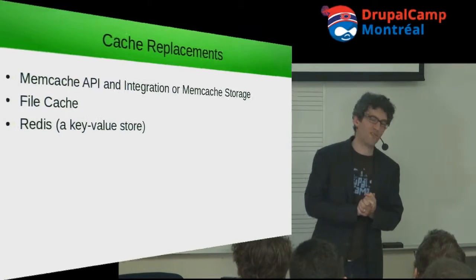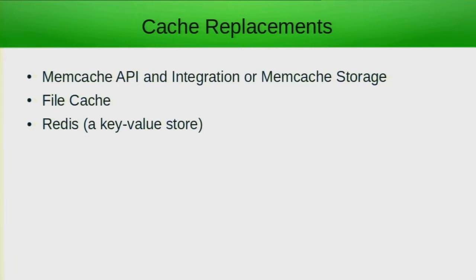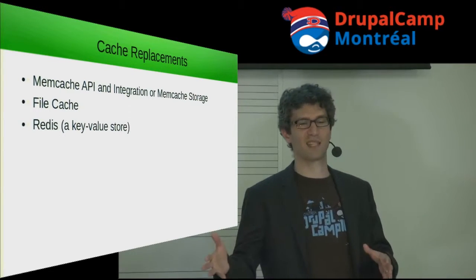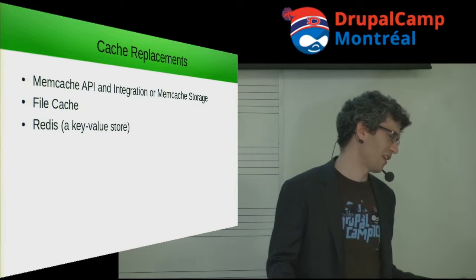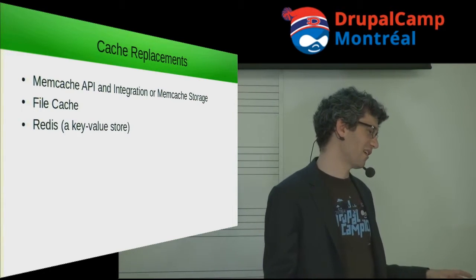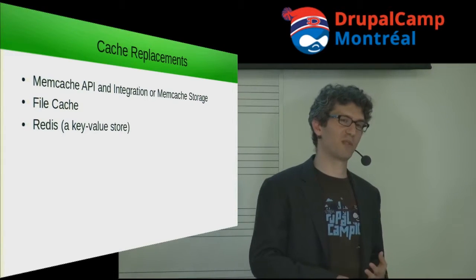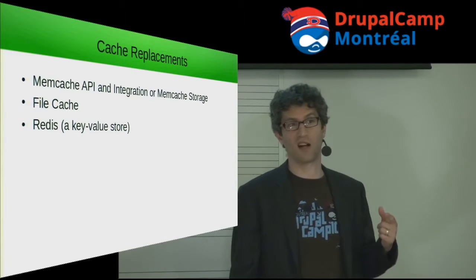Let's talk about cache replacements. By default, Drupal's cache system is in the SQL database — usually MySQL — and a relational database is not super efficient for that task. Memcache has been really popular: you have a cache running in memory instead of on disk, and memory is faster. File caching is another option — using files instead of a relational database. What's really getting big right now is Redis, which is specifically designed as a key-value store, really great for caching. Pantheon and a bunch of other Drupal hosting companies are all using Redis.